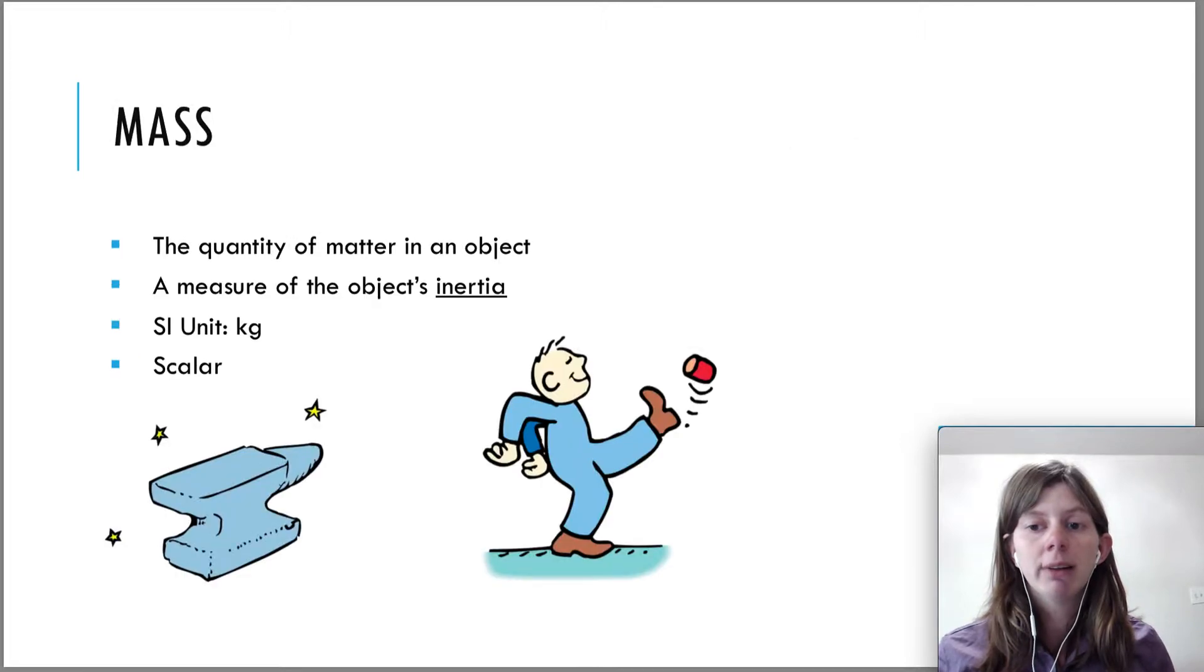So inertia is actually very closely related to this last quantity that I'd like to talk about, which is mass. You probably think of mass as the quantity of matter in an object. This anvil here made of iron is very massive because the atoms that make it up are more massive and there's a whole bunch of them. However, you can also think of mass as a measure of the object's inertia. So the more mass that it has, the more inertia it has. The mass just gives a number to that amount of inertia.